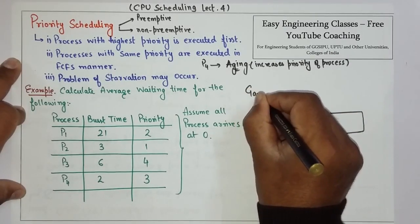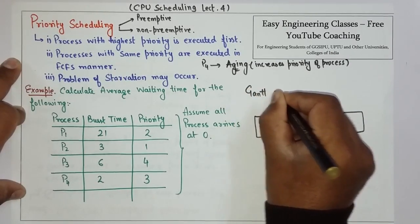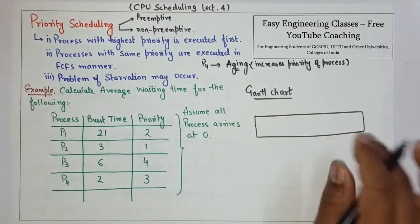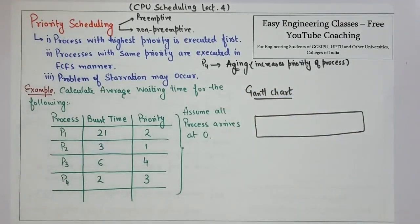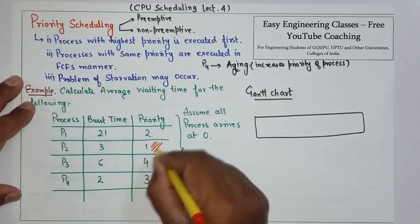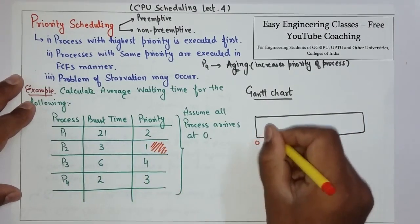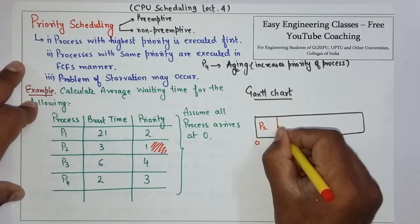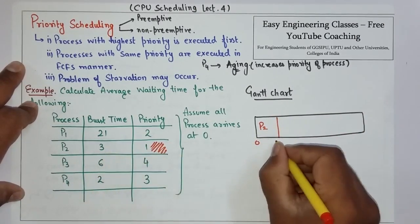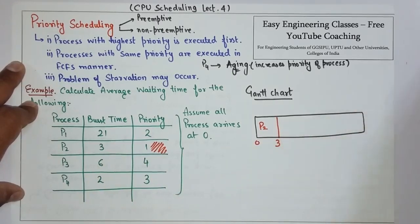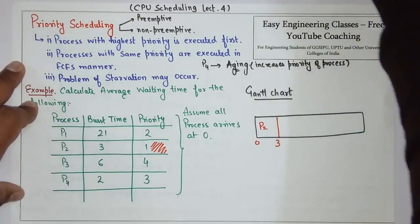Here is the Gantt chart. The highest priority is for P2, so first we will allocate P2. P2 will run up till time 3.